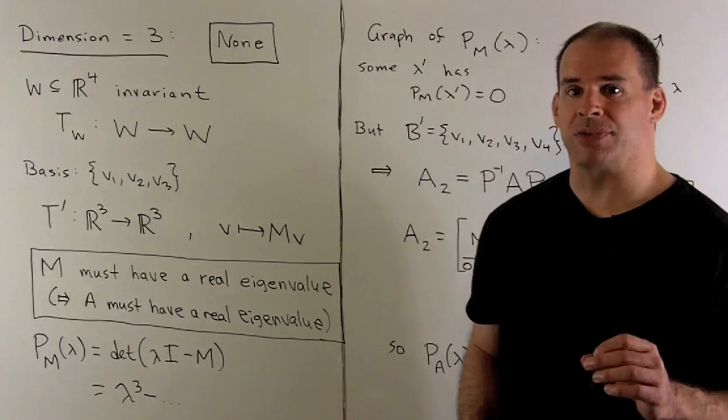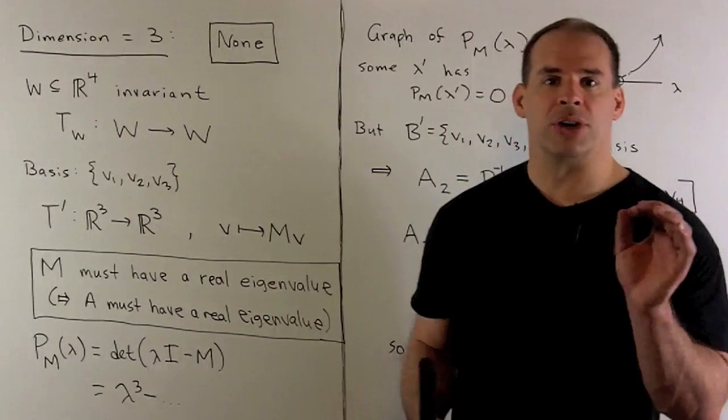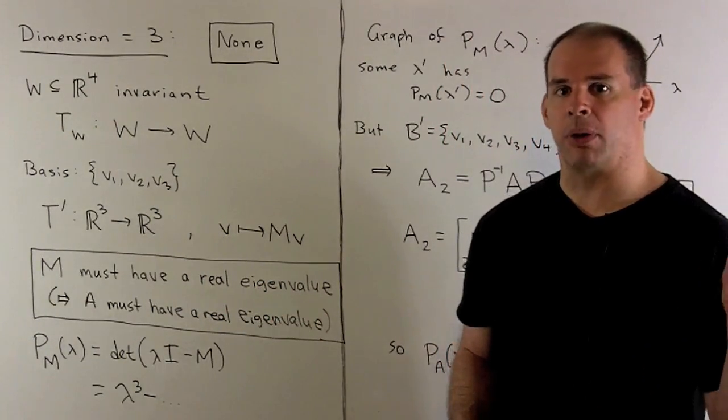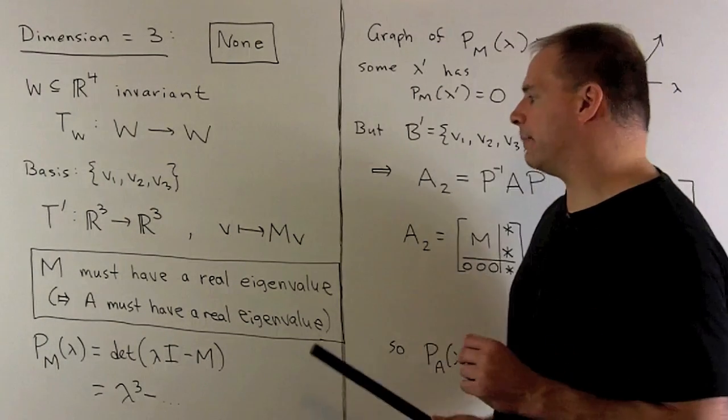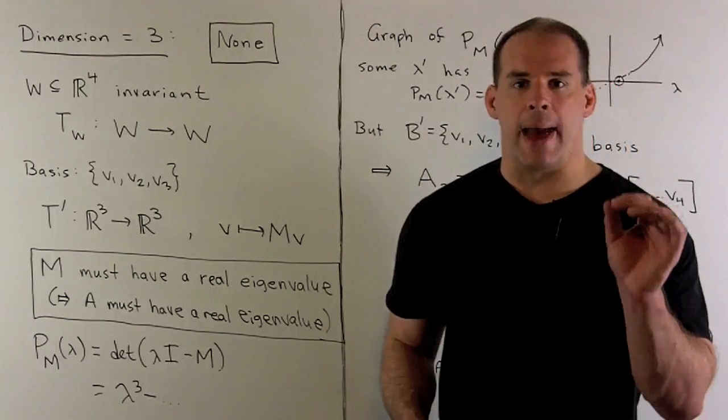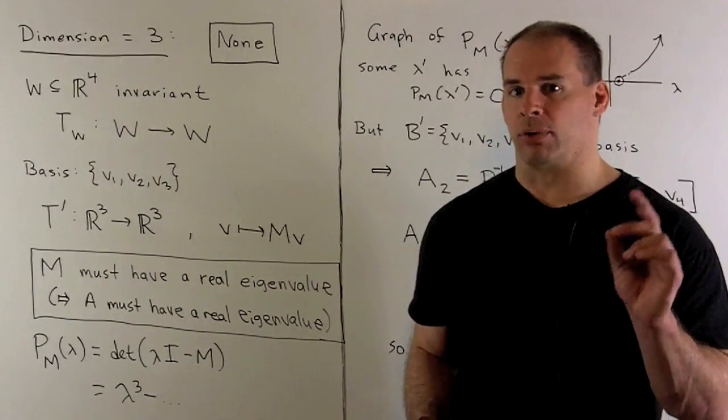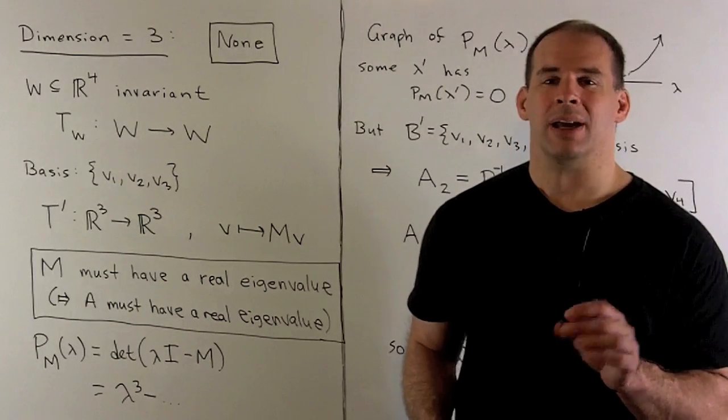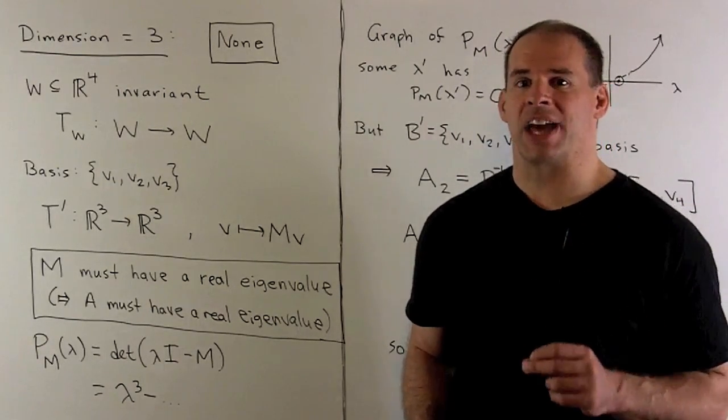We choose a basis for W. So, we'll call that V₁, V₂, and V₃. That's going to induce a linear transformation T′ from R³ to R³. That'll have an associated matrix M. We'll show that M must have a real eigenvalue, and that's going to mean that A must also have a real eigenvalue. Because we actually computed the characteristic polynomial for A, that's going to give us a contradiction.